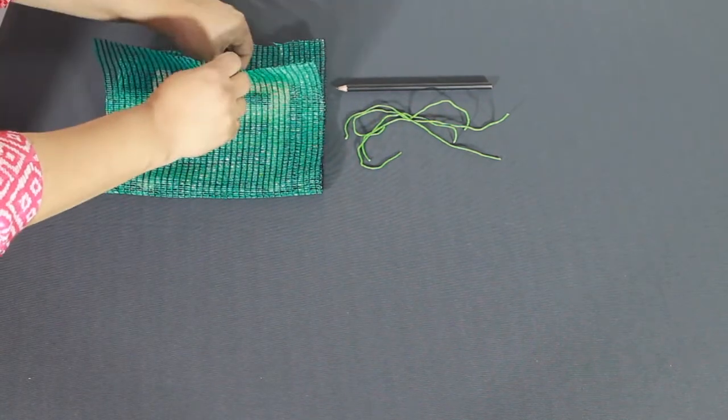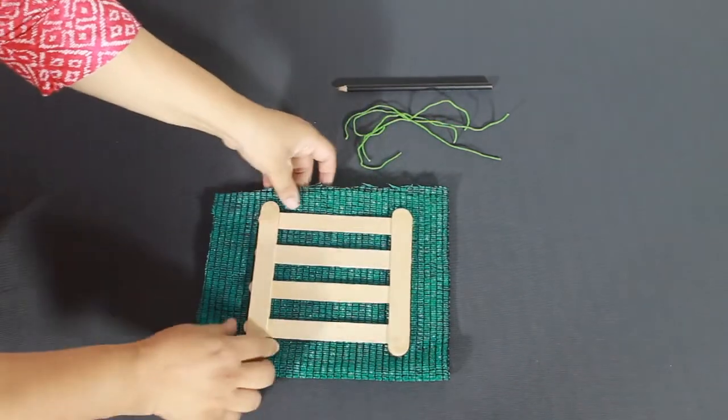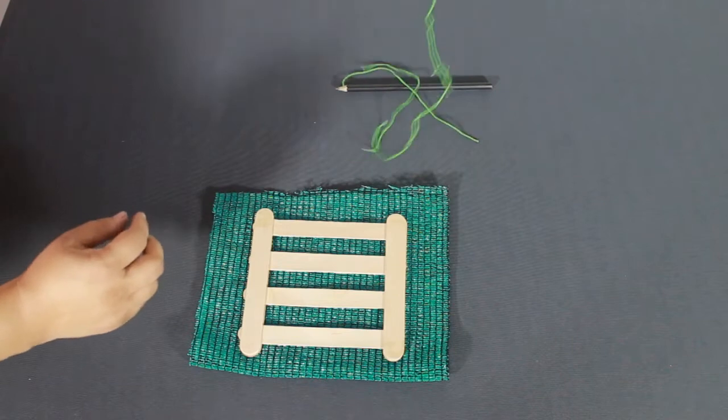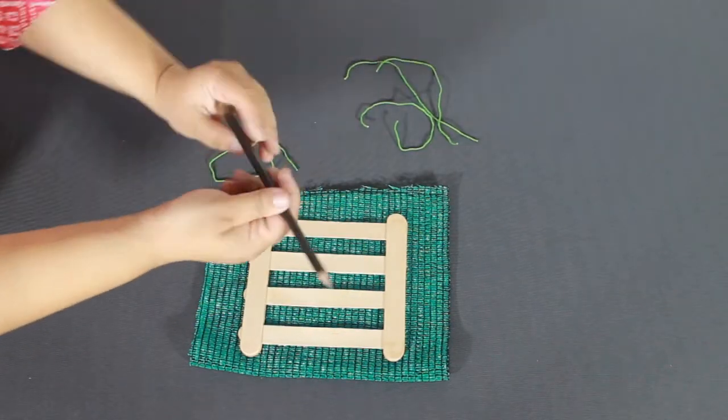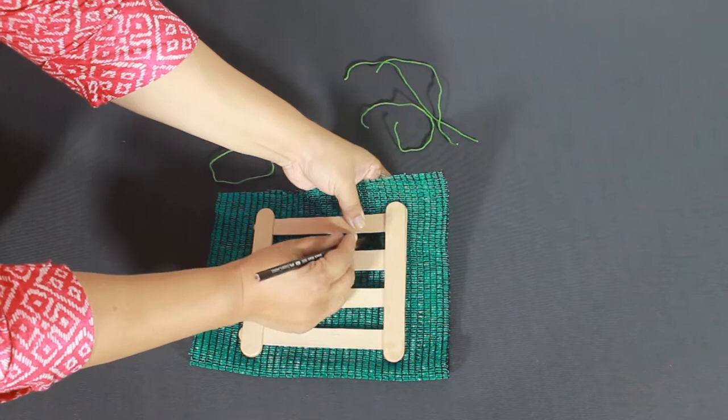Poke a hole with a pencil and weave a string across the net and the frame. Secure it with a knot or two. Repeat on all sides.